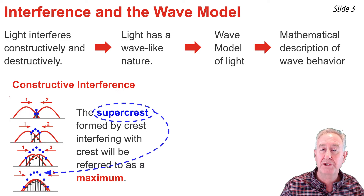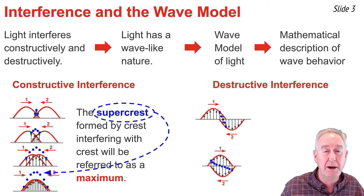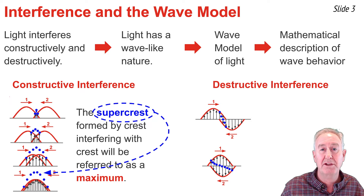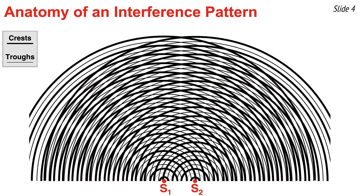Destructive interference occurs anywhere that a downward displaced pulse meets up with an upward displaced pulse. The result is that the two pulses can cancel each other, as long as their displacement from rest is the exactly same amount but in opposite directions. On an interference pattern, we always observe destructive interference occurring at the same location. We refer to such locations as interference minima.